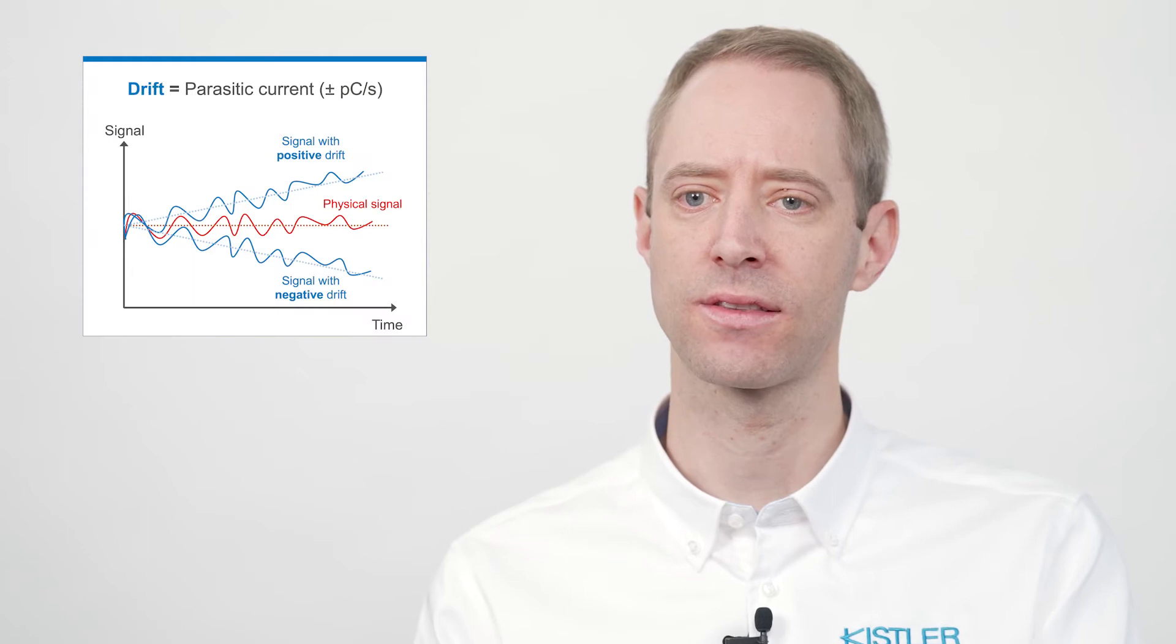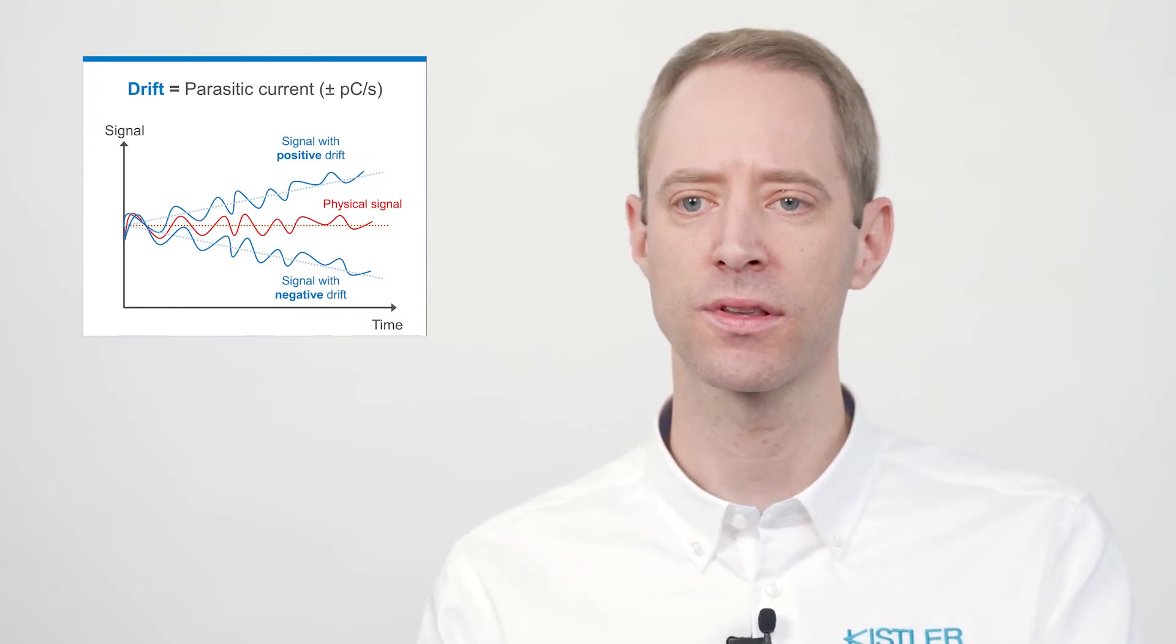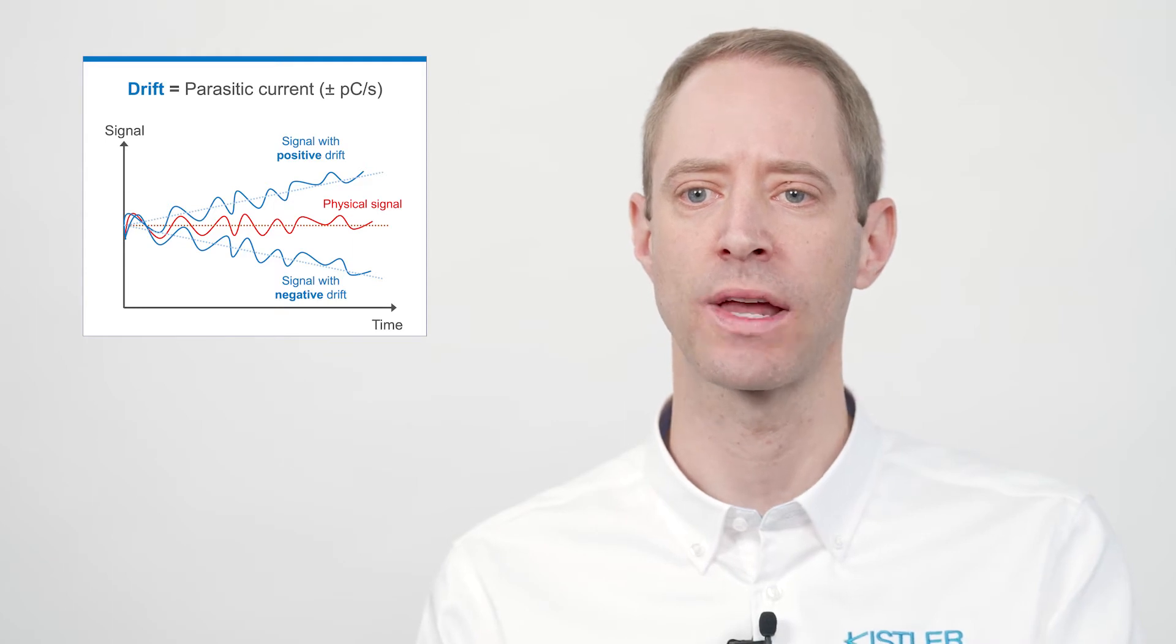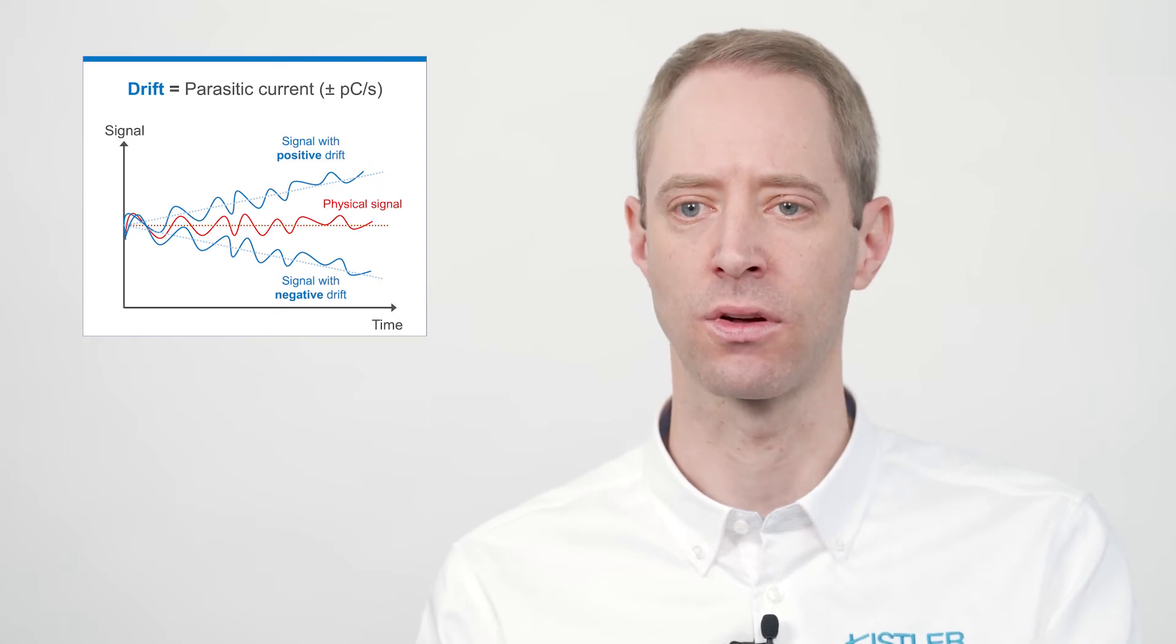So far so good, but what is actually a drift in a piezoelectric measuring chain? A drift is a parasitic current and is expressed in picocoulombs per second. Both negative and positive drifts can occur in a piezoelectric measuring chain. In this video, I'm going to focus on linear drifts only.